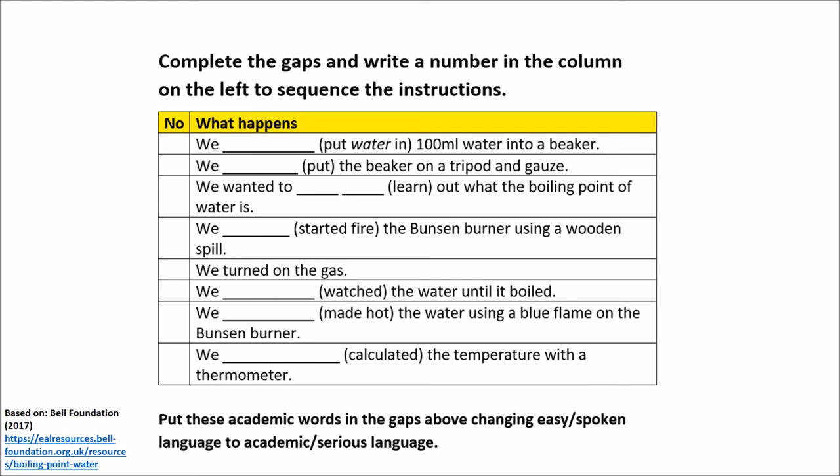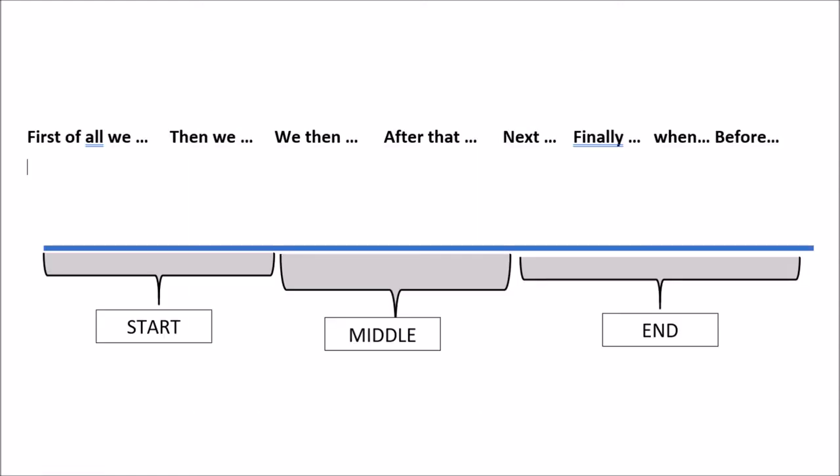Now, we were almost ready to write. The orange and green levels were given this timeline first, and I asked them to place the connectives, connecting phrases, into the relevant categories of start, middle and end first.